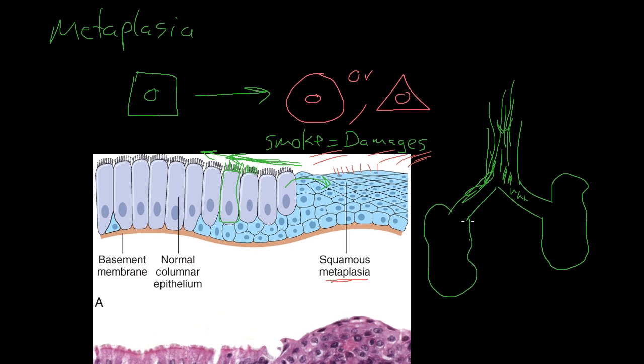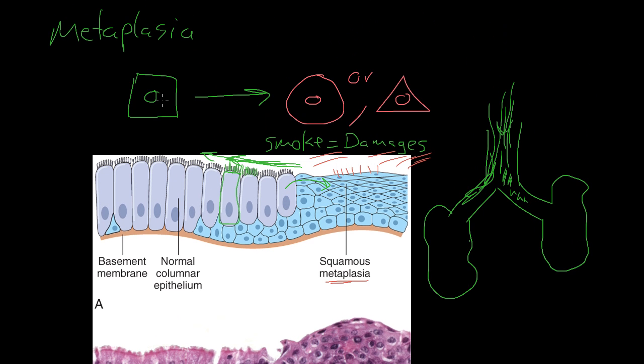So that is an example of metaplasia converting one cell type to another to prevent injury or to be a better or stronger cell type that will handle stress a little bit better. So that's why some of the process of metaplasia happens is to convert a stronger cell type from a weaker cell type to a stronger cell type that will handle that specific stress a little bit more efficiently.